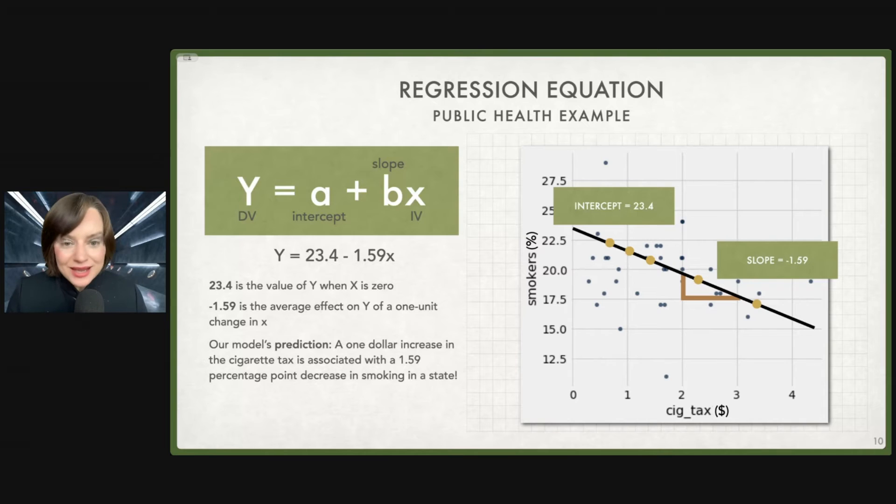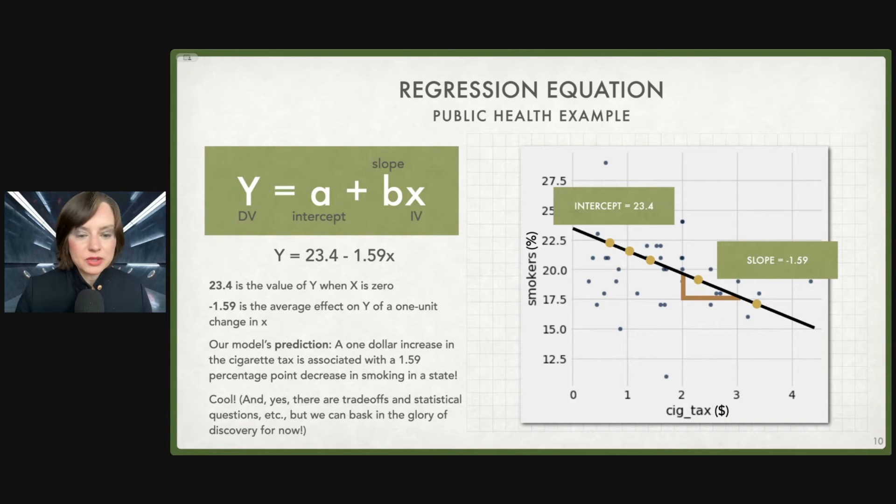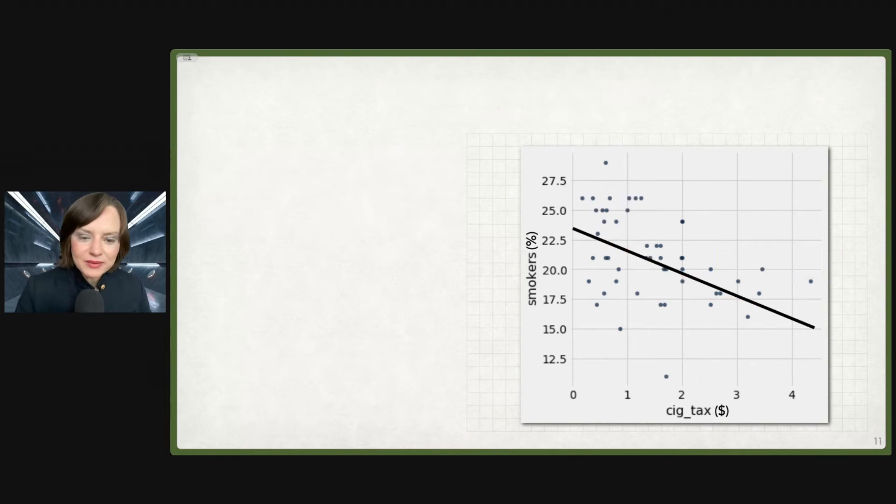So we can calculate Y equals 23.4 minus 1.59 times X. So 23.4, the value of Y when X is zero, minus 1.59, the average effect on Y of a one unit change in X. Our model's prediction thus is that a $1 increase in cigarette tax is associated with a 1.59 percentage point decrease in smoking in a state. That is our prediction. Are we right? Well, that depends on whether we think this is the right model for the data, whether we trust where the data came from, and whether we're missing perhaps other variables that might be playing a role here. But this is our prediction from our model. We made a prediction.